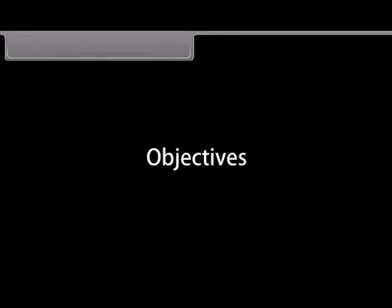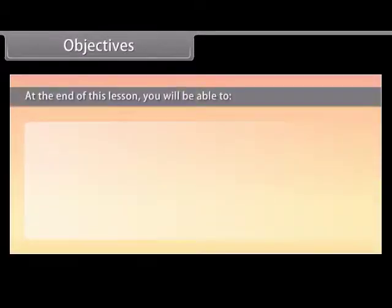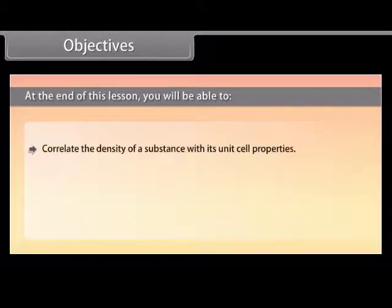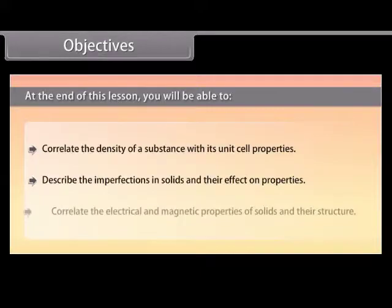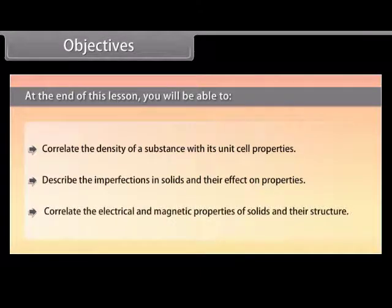At the end of this lesson, you will be able to: correlate the density of a substance with its unit cell properties, describe the imperfections in solids and their effect on properties, and correlate the electrical and magnetic properties of solids and their structure.